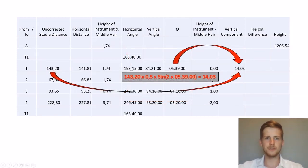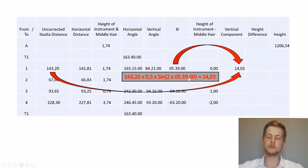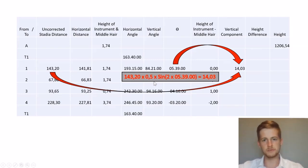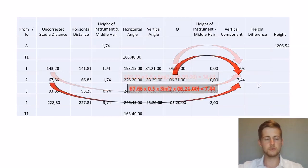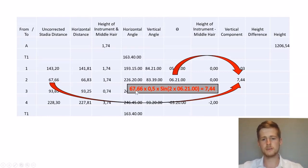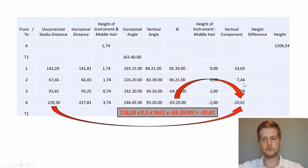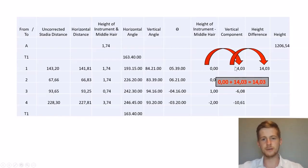Next we'll calculate our vertical component. This is very similar to our horizontal distance because we will be using theta once again and also our uncorrected stadia distance. So it would be our uncorrected stadia distance times 0.5 times sine of 2 theta, and it'll give us our answer for the vertical component. We'll do this for every point.